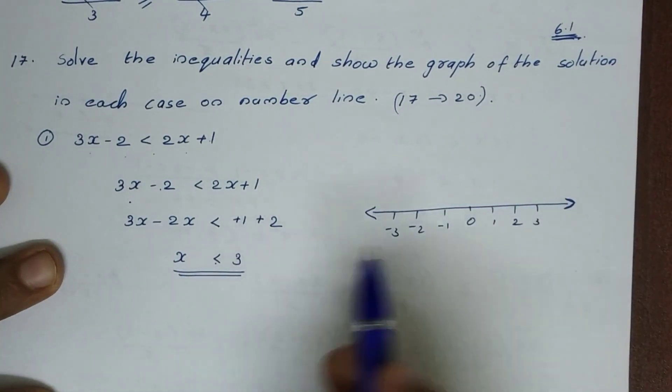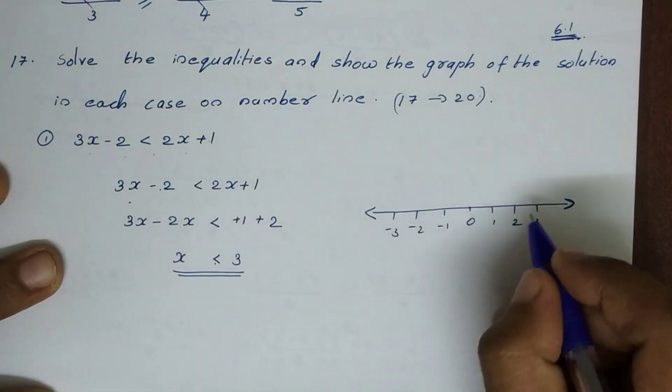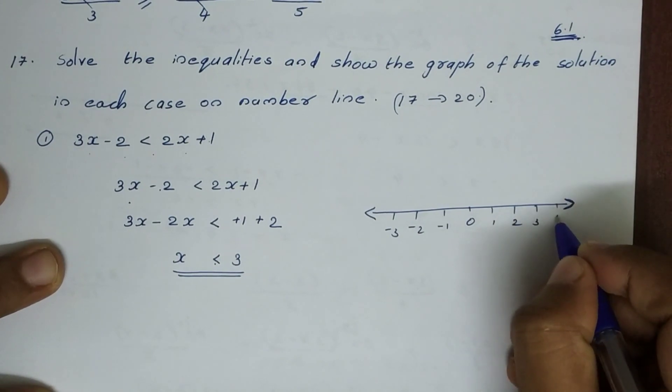x is less than 3. So this point is 3. Since x is less than 3, we mark 3 on the number line.